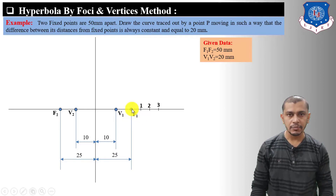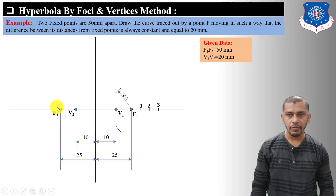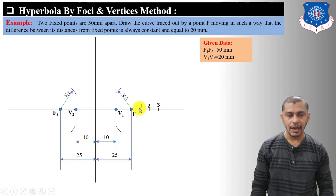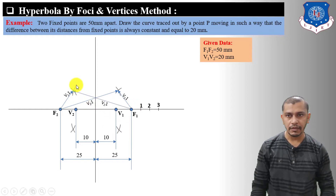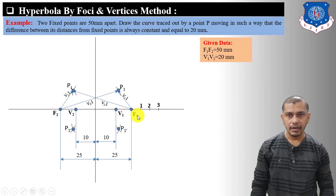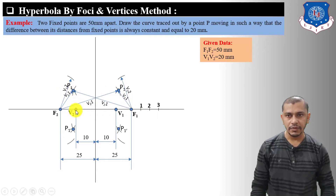Measure the arc length V1 to 1 on the compass and give an arc from focus point F2 on both sides. Also measure V2 to 1 arc length and give an arc from focus point F1 on both sides — the intersections give points P1 and P1'. Measure V1 to 2 arc length and give an arc from focus F2 on both sides, then measure V2 to 2 arc length and give an arc from focus F1 on both sides, marking intersection points P2 and P2'.